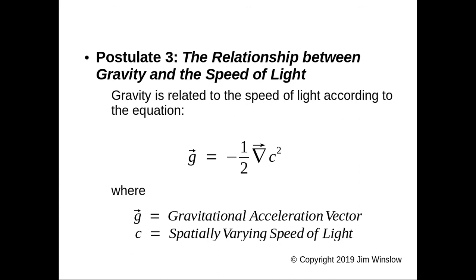And last but not least, postulate three: the relationship between gravity and the speed of light. Gravity is related to the speed of light according to the equation g = -½∇(c²). The gravitational vector equals minus one half the gradient of the speed of light squared.